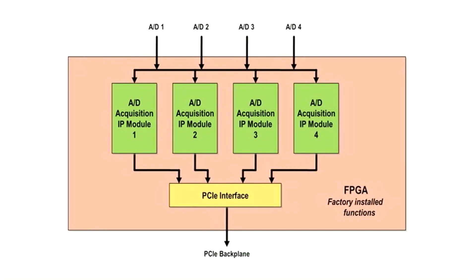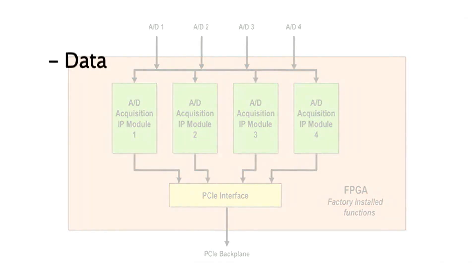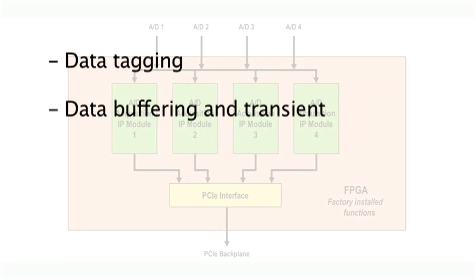Powered by four A to D acquisition IP modules in the FPGA, the 53662's built-in features include data tagging with channel ID, sample accurate time stamping and data length and transfer information, data buffering, and transit capture using the four banks of DDR synchronous DRAM memory.